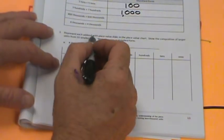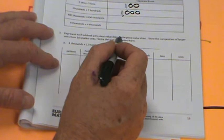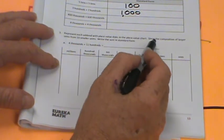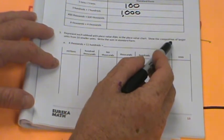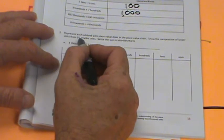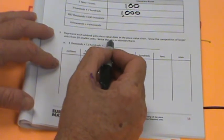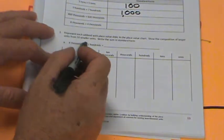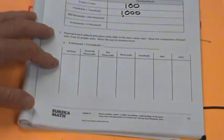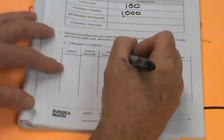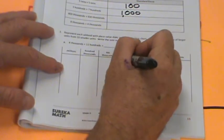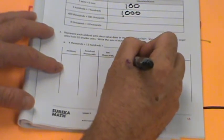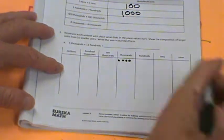Welcome back. Represent each addend with place value disk in the place value chart. Show the composition of larger units from ten smaller units. Write the sum in standard form. So we have four thousands plus eleven hundredths. So let's do our four thousands. This is a tough one.